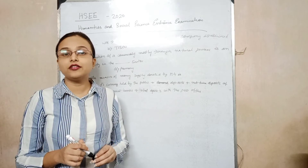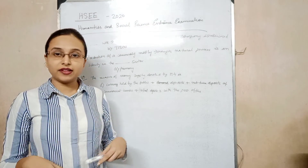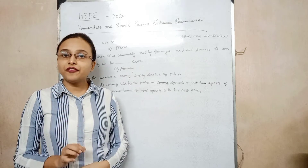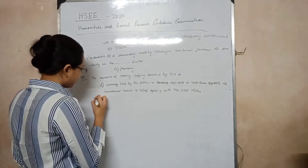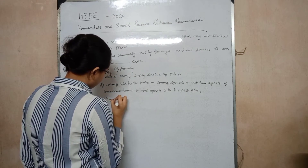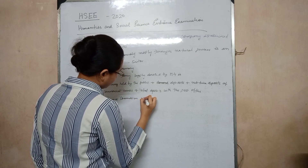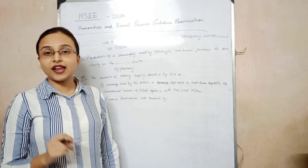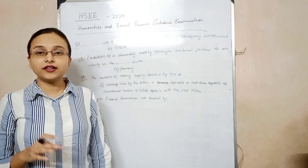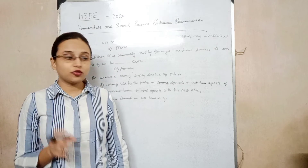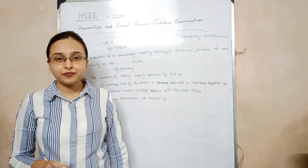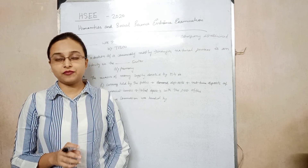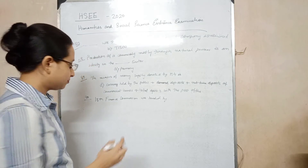So M4 is the total money circulating in the economy comprising money held by the public, plus demand deposits, plus net time deposits, plus total deposits. Moving to question number 90: The 15th Finance Commission was headed by... The finance commission is held after an interval of around 5 years. The options are: A. YV Reddy. B. NK Singh. C. Vijay Kelkar. D. Urjit Patel. The correct option is B — NK Singh.